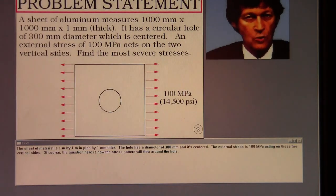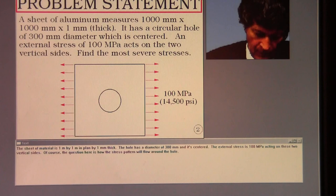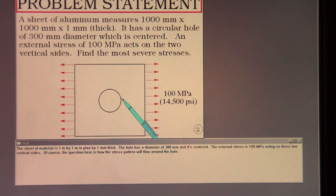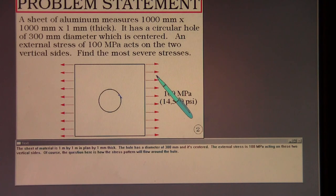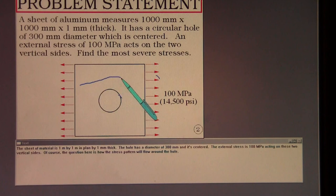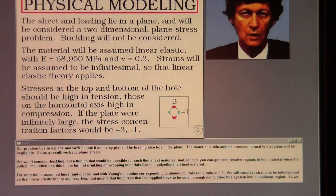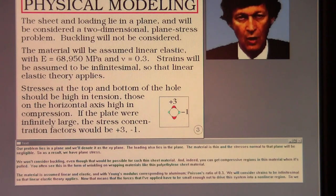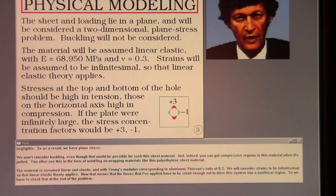The sheet of material is one meter by one meter in plan by one millimeter thick. The hole has a diameter of 300 millimeters and it's centered. The external stress is 100 megapascals acting on these two vertical sides. Of course, the question here is how the stress pattern will flow around the hole. Our problem lies in a plane and we'll denote it as the XY plane. The loading also lies in the plane. The material is thin and the stress normal to that plane would be negligible. So as a result, we have plain stress.